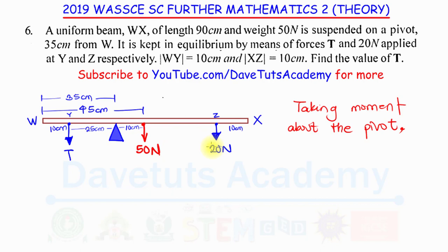Now for the 20 N force at Z, which is 10 cm from X. The total length is 90 cm, so from W to Z is 80 cm. Since the midpoint is 45 cm, the distance from the midpoint to Z is 35 cm. Therefore, the distance from the 20 N force to the pivot is 35 cm plus 10 cm, which gives 45 cm.